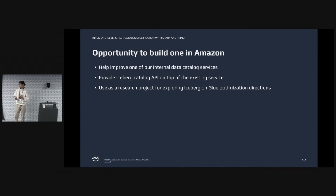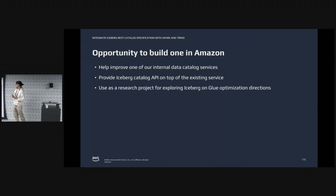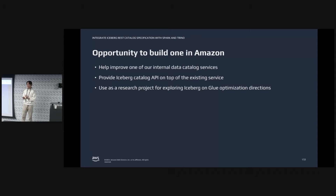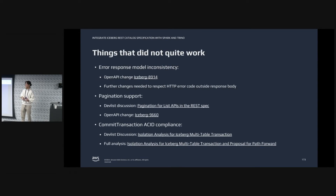Over the past year, we got the opportunity to experiment with building one ourselves. The opportunity came with improving one of our internal data catalog services in Amazon. The goal is, just like any other catalog integrations, to provide the Iceberg REST catalog API on top of the existing service to gain wider adoption for engine integrations. With this opportunity, we also wanted to make it a research project to explore different optimization directions — what can Iceberg REST catalogs do in the future, and how can we improve performance and usability?